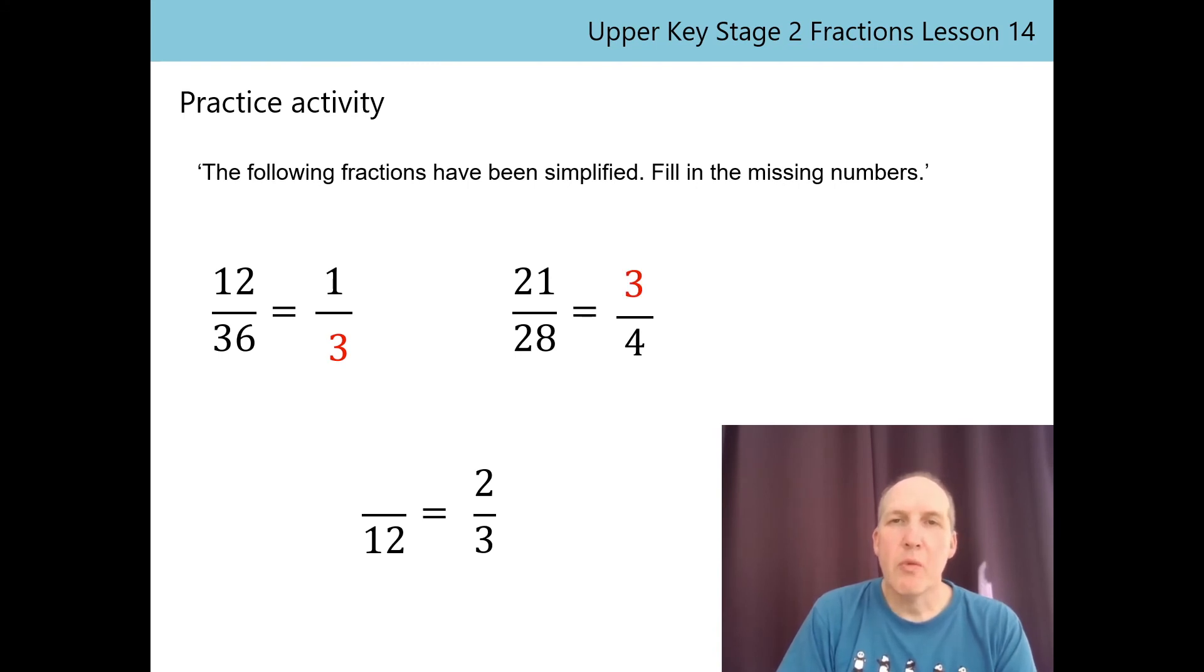In the final example, we're already given the simplified fraction, so we need to work a little bit differently. The denominator 12 must have been divided by 4 to give 3 in the simplified fraction. So I'll need to multiply the numerator 2 by 4 to give the missing numerator, which is 8. Check it. 8/12 is equivalent to 2/3. 8/12 simplifies to 2/3. The highest common factor is 4. The numerator and denominator could both be divided by 4.